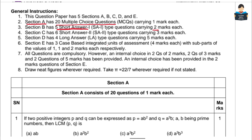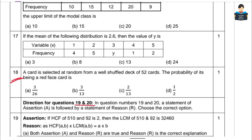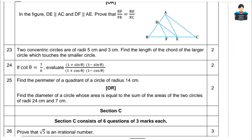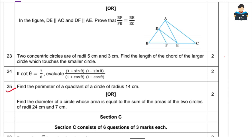In Section B, the 2 mark questions have internal choice. There is an internal choice in the 22nd question and there is an internal choice in the 25th question. So there are two internal choice questions in total in Section B.